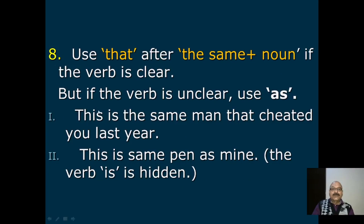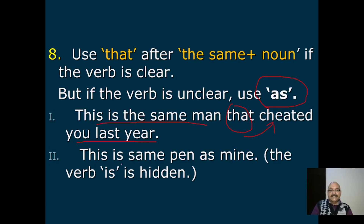'That' also stands for things: 'The little money that he had in his pocket has been spent on useless things.' Eighth rule: Use 'that' after 'the same + noun' if the verb is clear. But if the verb is unclear or hidden, use 'as'. Example: 'This is the same pen as mine' — here the verb is hidden, so 'as' is used.